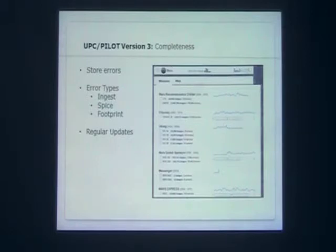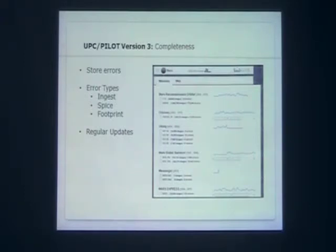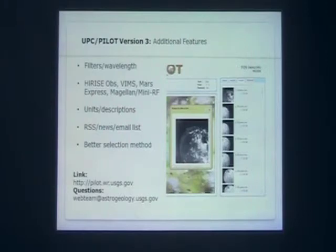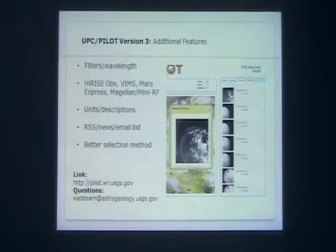There are other error types which are rare, but the footprint error type can happen — say it's a real small approach shot of a target with only two or three pixels. There's no way we're going to generate geometry from that, so that could be another error type you might get. We're also adding data for certain instruments like Themis and VIMS — different bands, filters, and wavelengths that people are really interested in — into the database so people can query on those things.